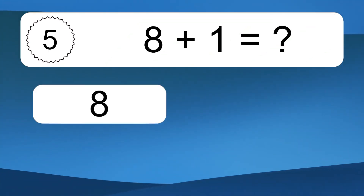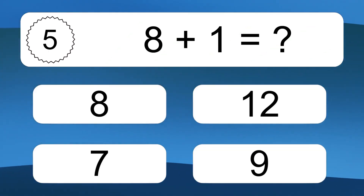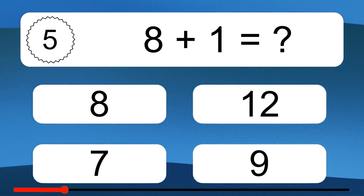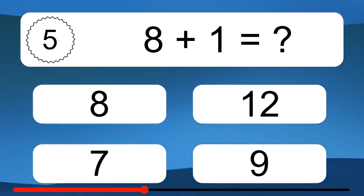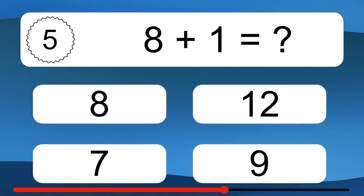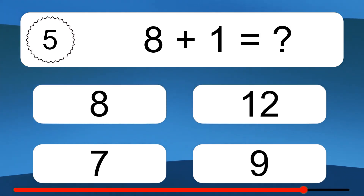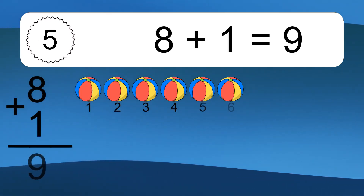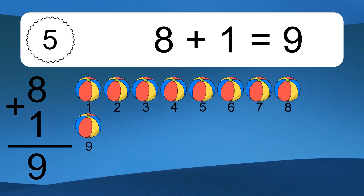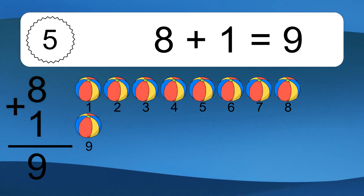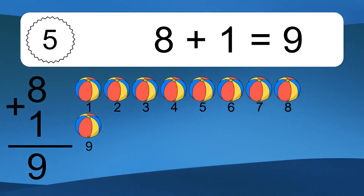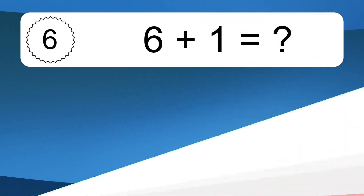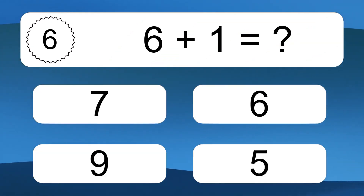8 plus 1 equals what? 8 plus 1 equals 9. Let's count it. 1, 2, 3, 4, 5, 6, 7, 8, 9.